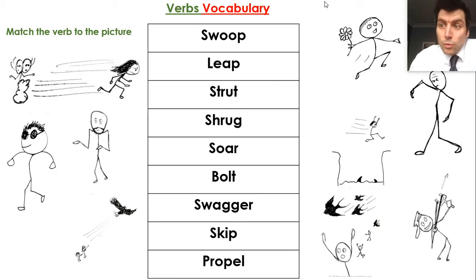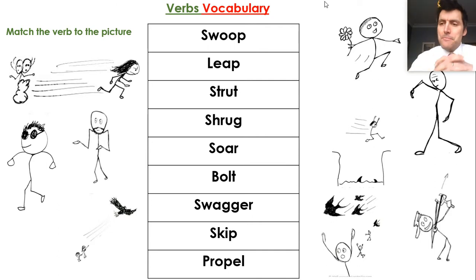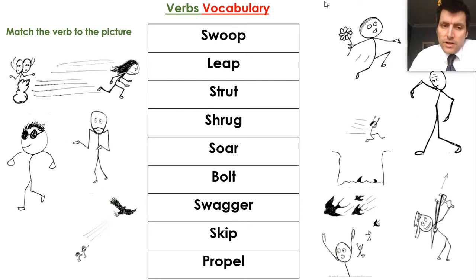We've got: swoop, leap, strut, shrug, soar, bolt, swagger, skip, and propel. All of those are movement verbs that show how characters or beings might move.